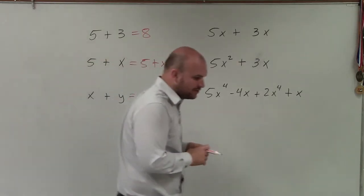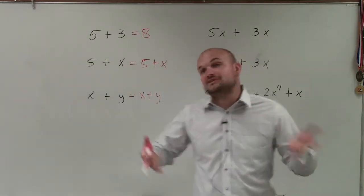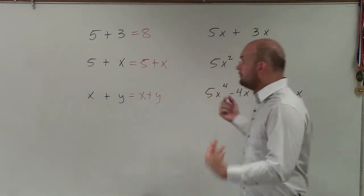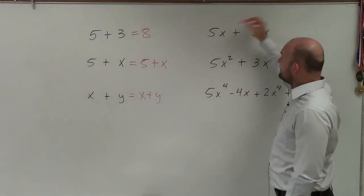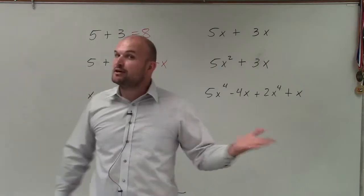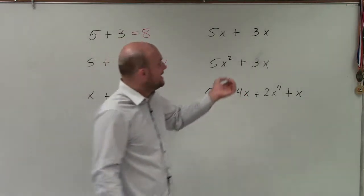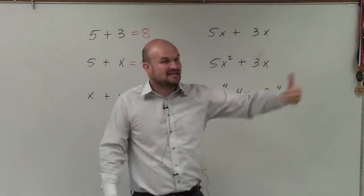All right, so now let's kind of get into, well, how are we going to combine them then when they do have the same variable factors? For instance, 5x plus 3x. Those have the same variable factors. They both have an x. And the factors of x are x and 1, right?